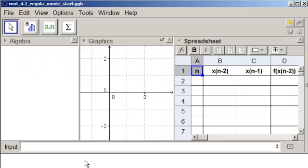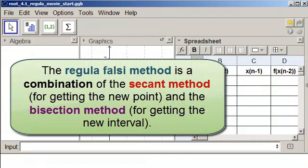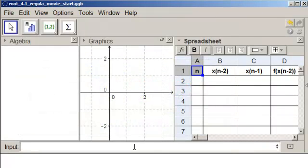So here we are in our standard window for GeoGebra. Let's remember that Regula-Falsi is a combination of the secant method for finding the new point and the bisection method for finding the interval. So we are going to have to put in both of those complicated formulas. But we will start by just inputting our function.